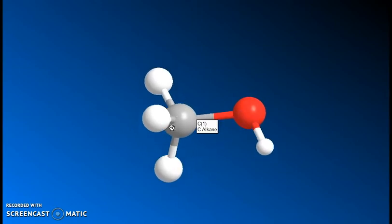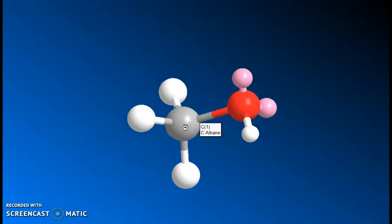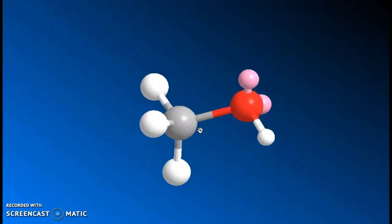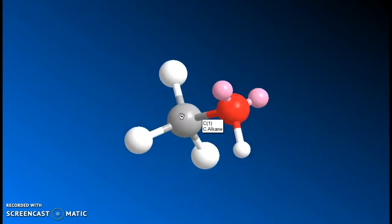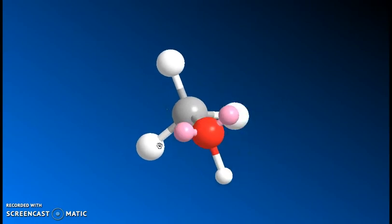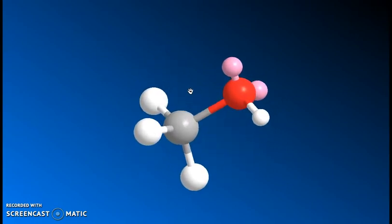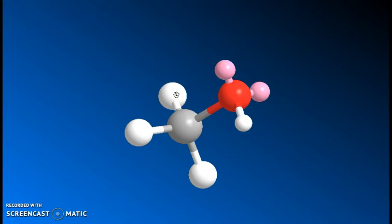And we can explain this if, again, we look at the lone pairs. This time the oxygen has two lone pairs, and you can see they occupy the third and fourth position around that oxygen, again indicating why that oxygen is sp3 hybridized and giving us the bent shape for this group right here.